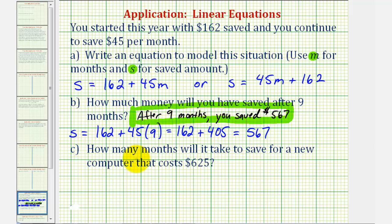Now for part C, how many months will it take to save for a new computer that costs $625? So to answer part C, we'll now substitute 625 for S and then solve for M.